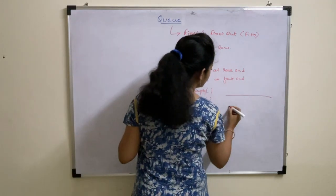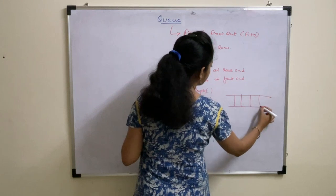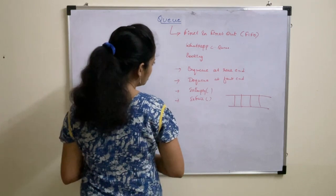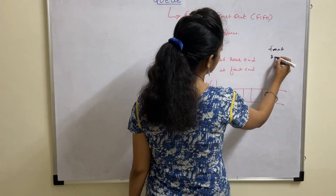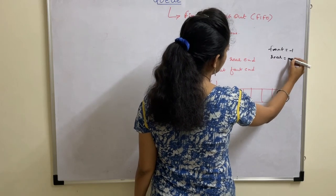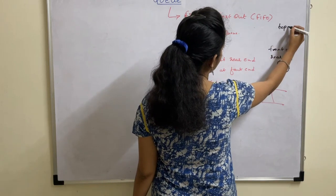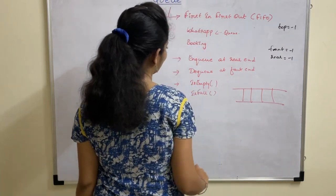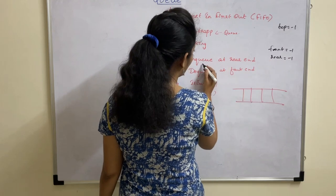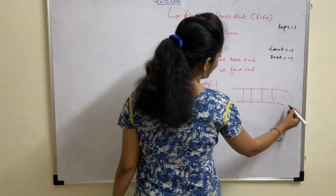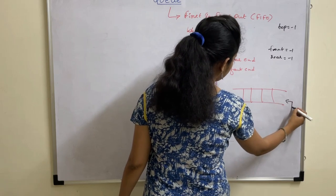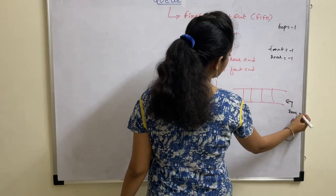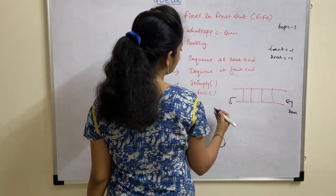A Queue will be represented open at both ends, whereas a Stack is open only at one end. We are using terms like front and rear. Initial values of front and rear are minus one, just like how the top value is minus one in case of Stack. EnQ means insertion but it starts at the rear end — rear end means this end, whereas front end means this end. So insertion takes place from rear, whereas deletion takes place from the front end.